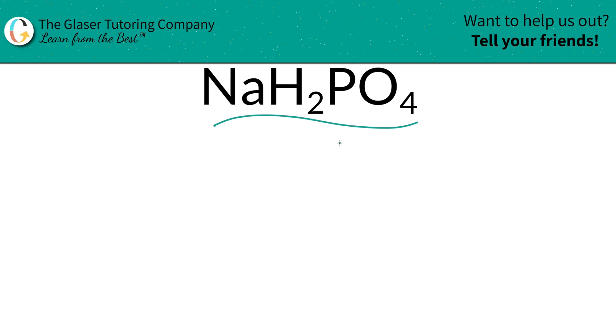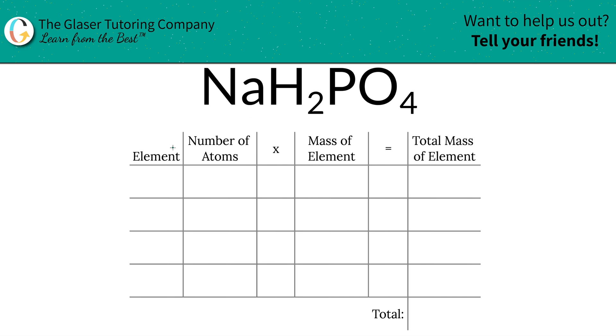Take a look at this table. I've made it. Bam. So the first step is to write the elements we see in the compound. So we've got sodium, hydrogen, phosphorus, and oxygen.